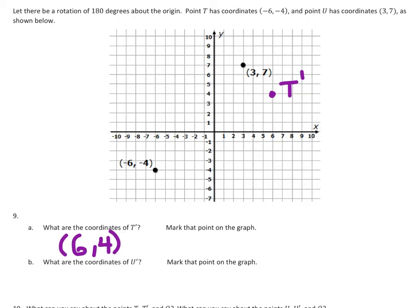Point U, which is at 3, 7 right here, we're going to rotate that 180 degrees, but I'm not going to use the rotation method. I'm going to use the coordinate rule. If I had 3, 7, U prime would be the opposites of those. So instead of 3, I've got negative 3, and instead of 7, negative 7. So I can graph that point—negative 3, negative 7 would be this point at U prime.